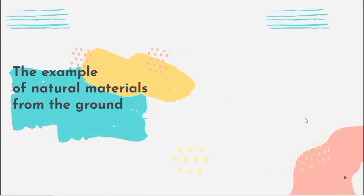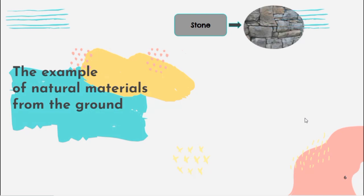Next, the example of natural materials from the ground. First, stone. We can get stone and we use stone to make statues.